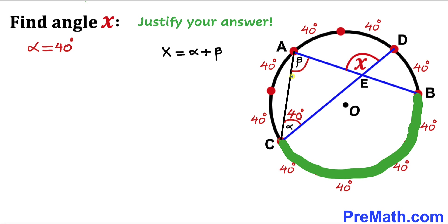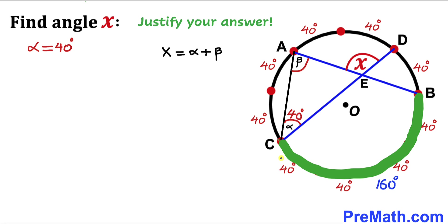Here's our next step. We can see that this angle beta is at the circumference for this arc BC. This arc BC angle is going to be 160 degrees.